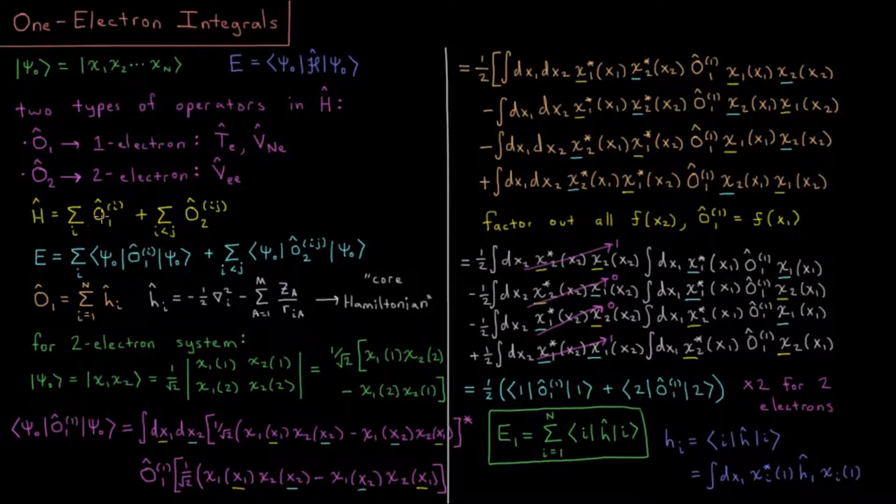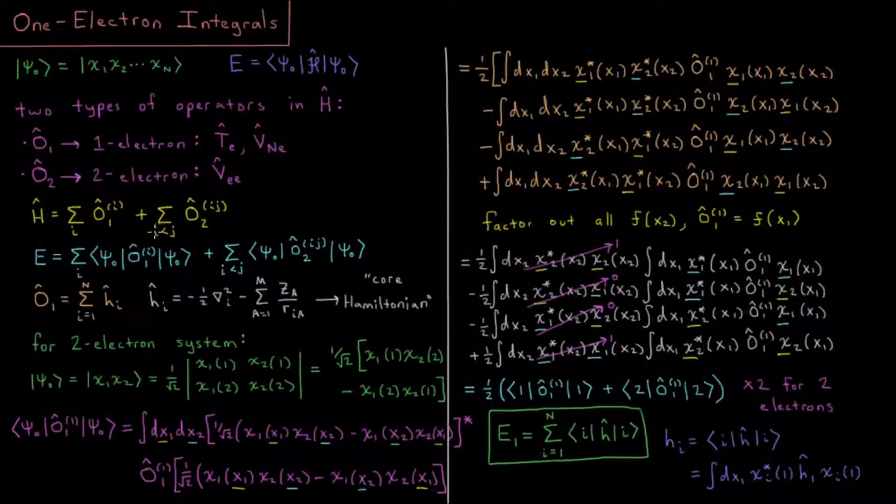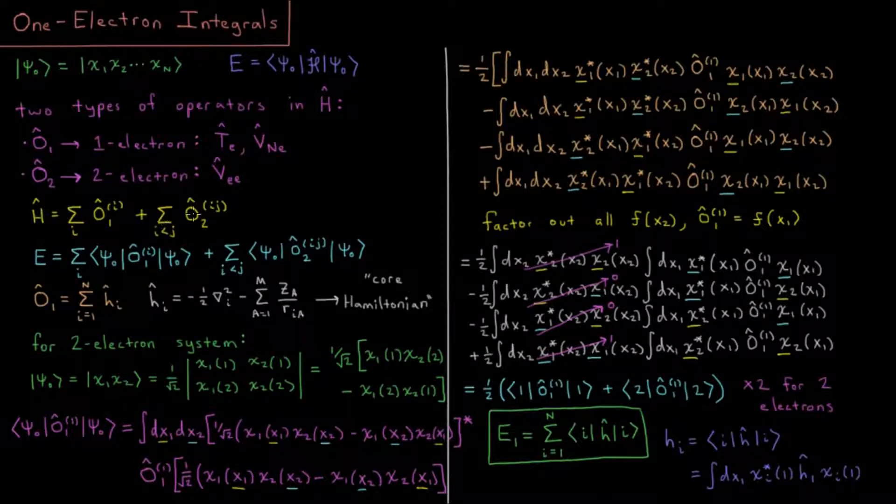How many one-electron operators are there? There's one for every electron, so n of them if we have n electrons. And how many two-electron operators do we have? It's all the pairs of electrons, so n times n minus 1 over 2, a quadratic number of those.